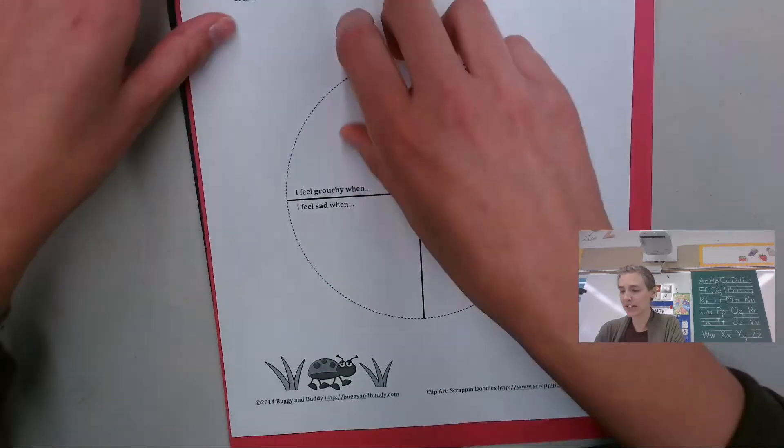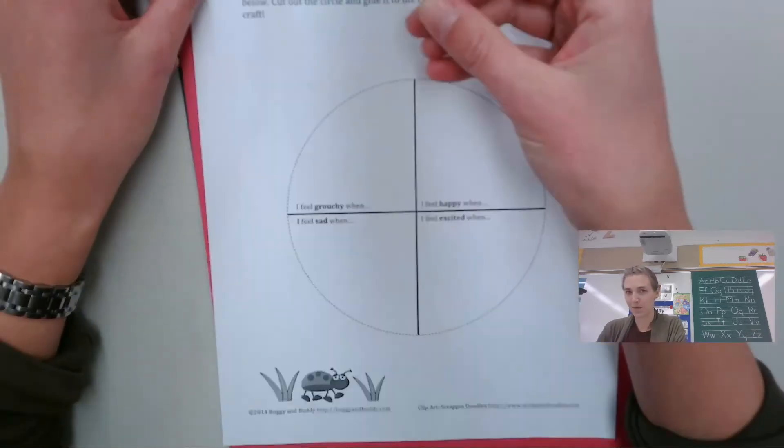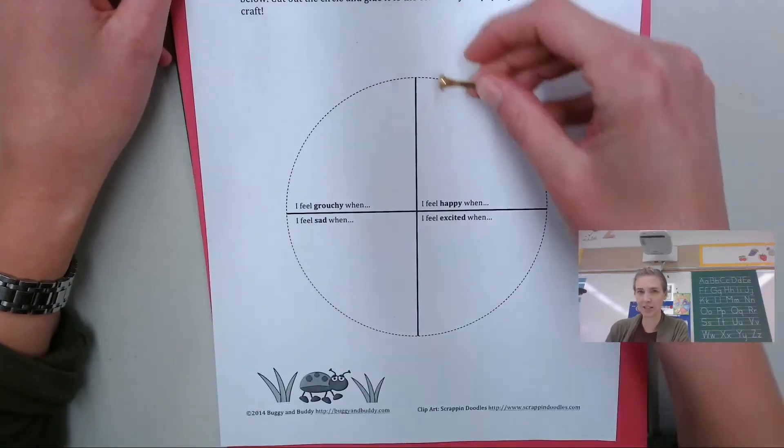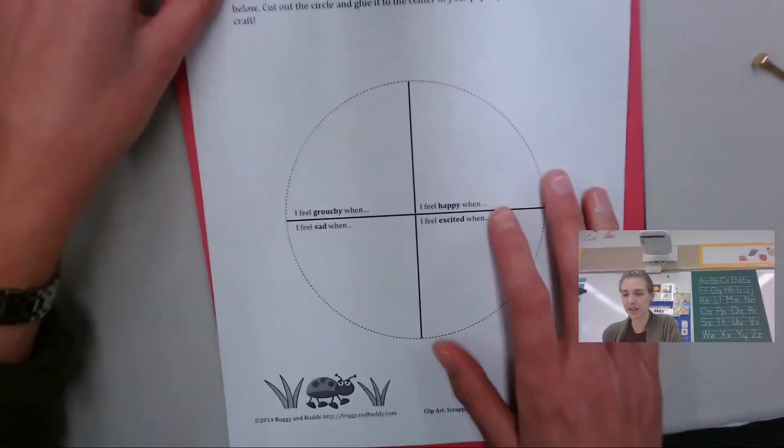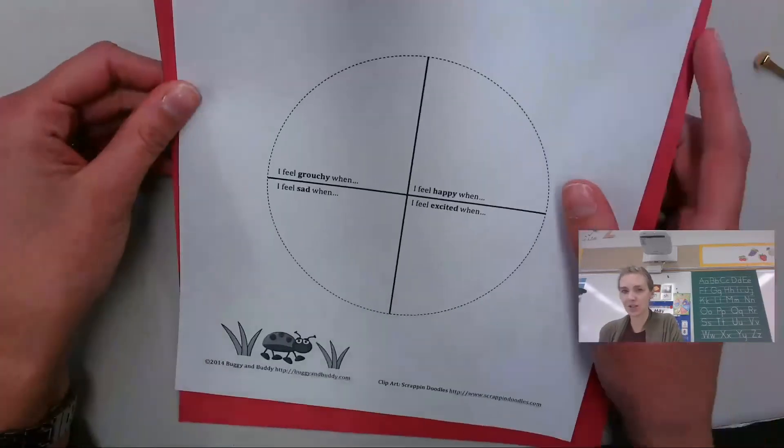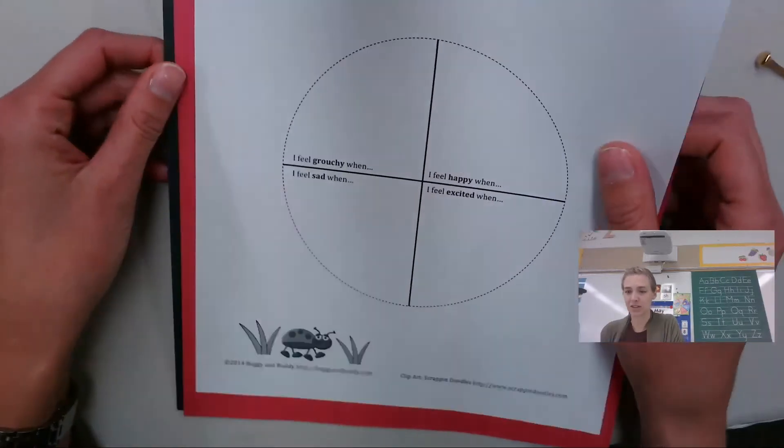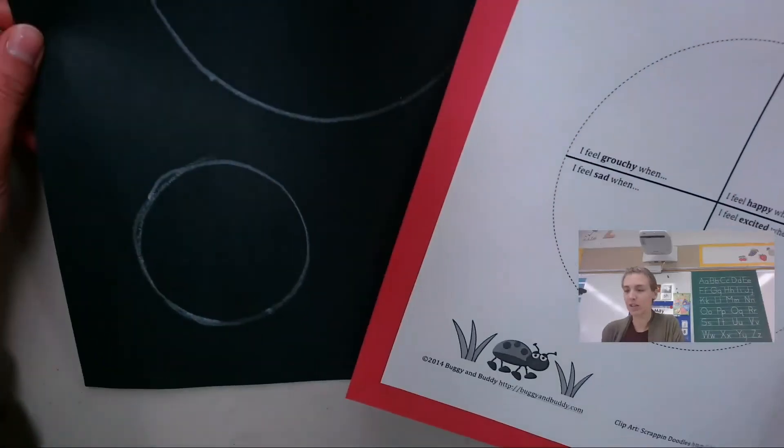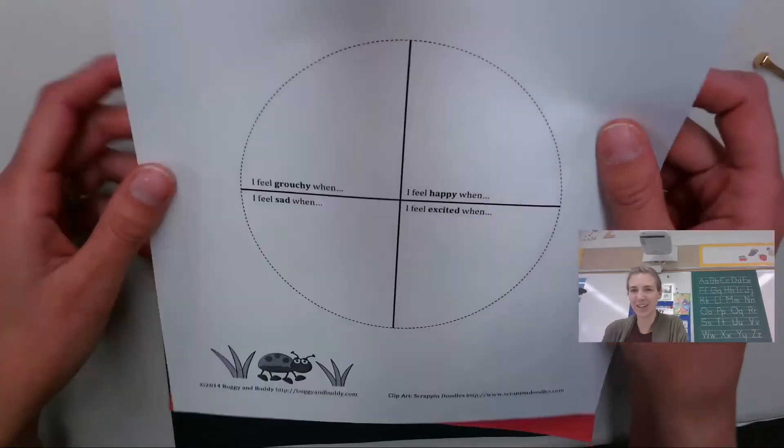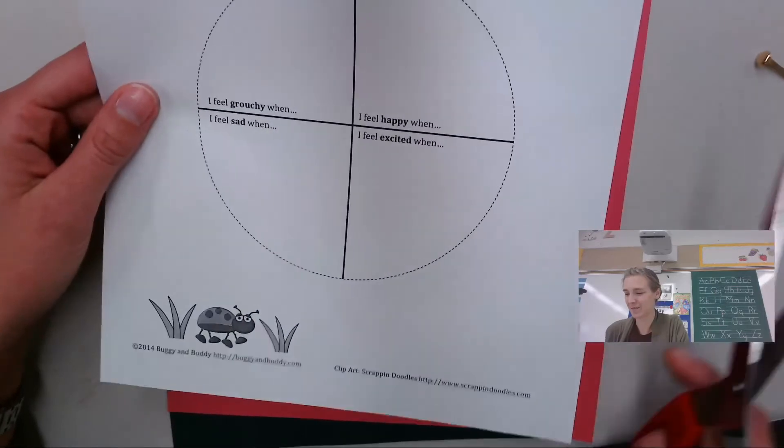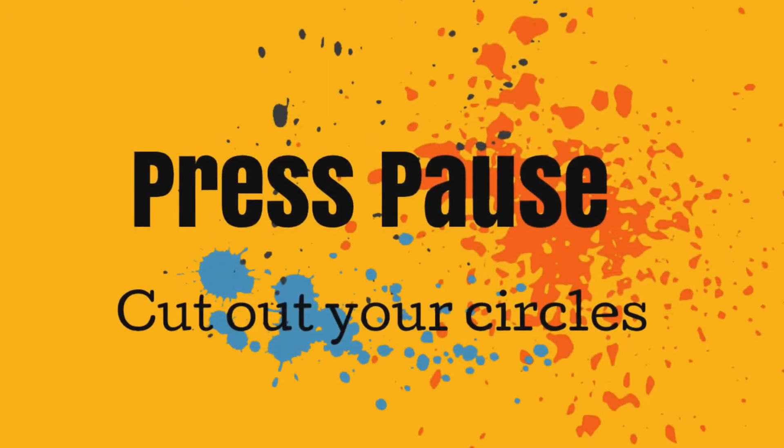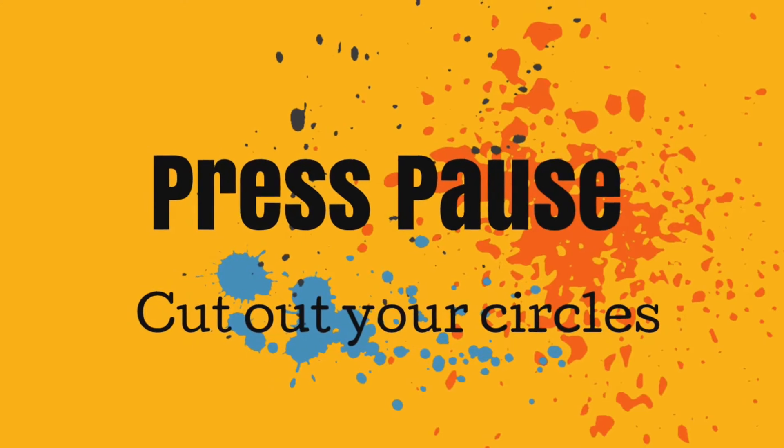So you'll need this booklet. You can take the paper fastener off and just set it to the side and you can take the staple out. And the first thing you're going to do is you're going to cut out all the circles. Go ahead and do that. Now press pause and cut out your circles.